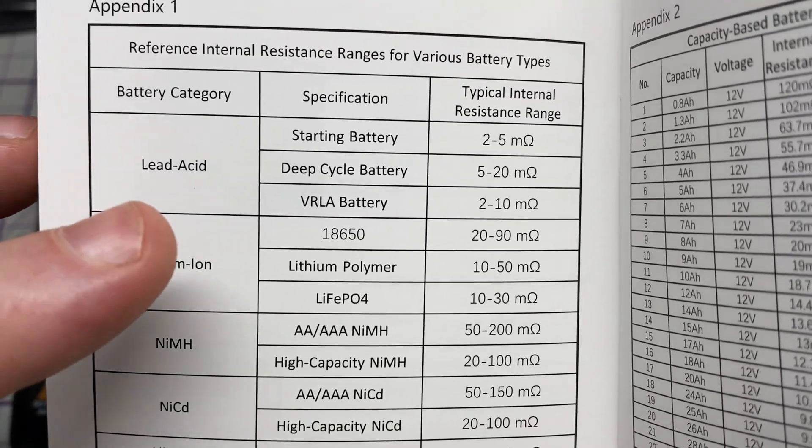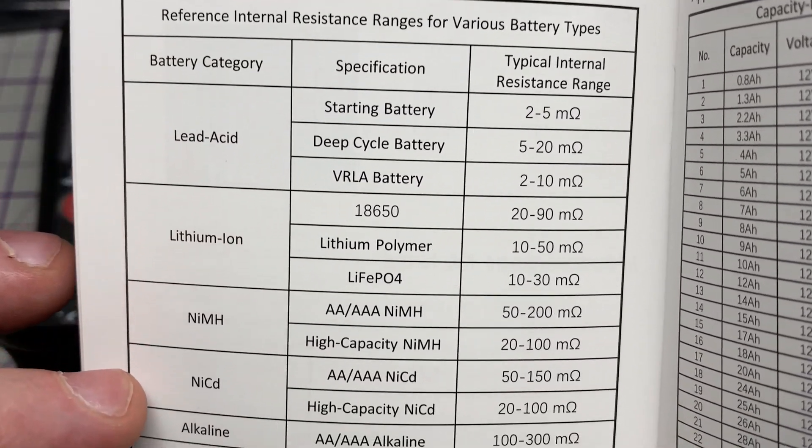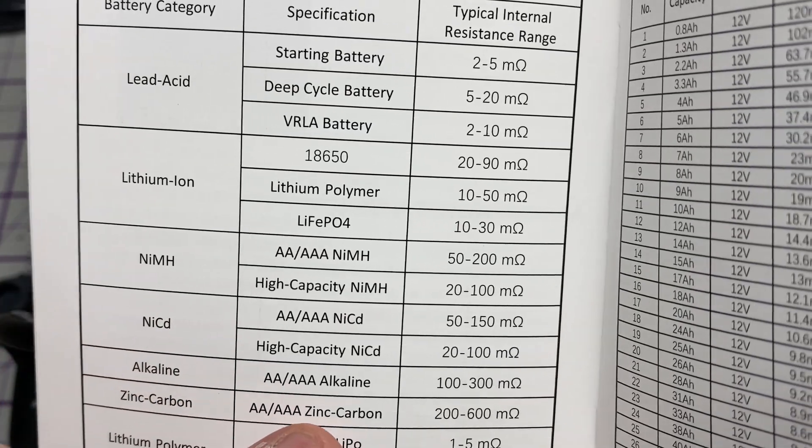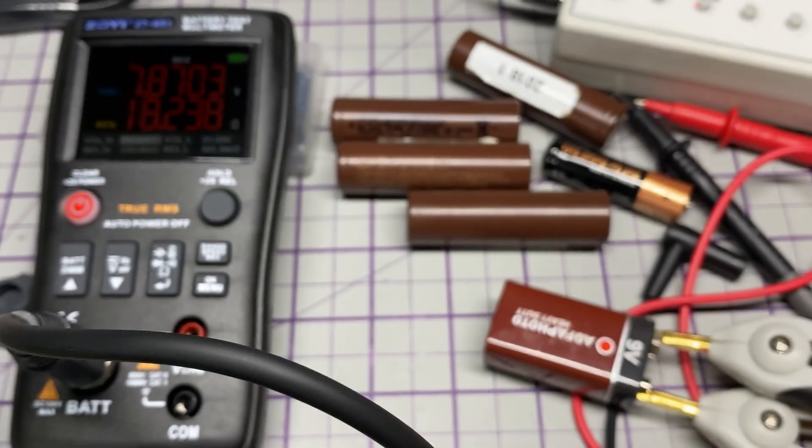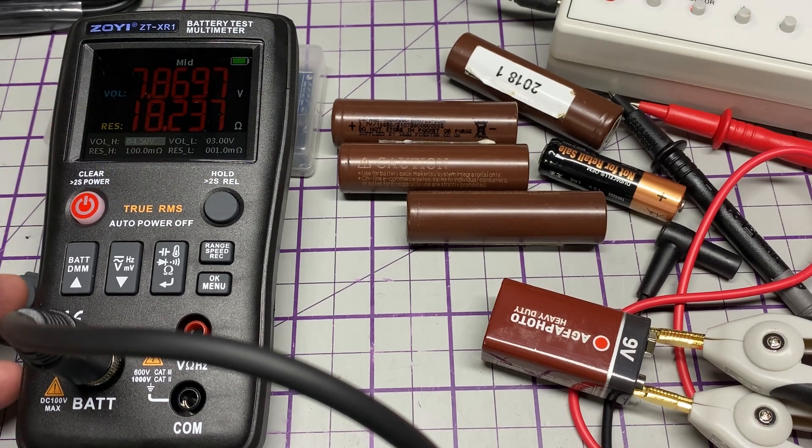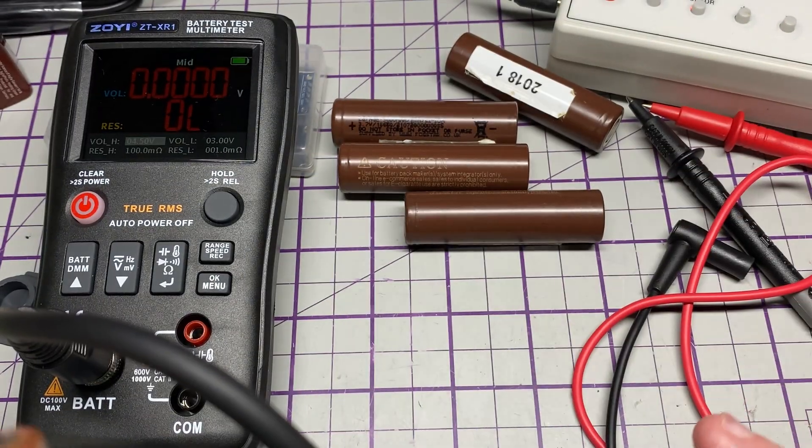I'm just having a look for the reading for that, so it's a zinc carbon. 2 to 600 milliohms and it's well low. I think the display tells us that it's bad anyway.